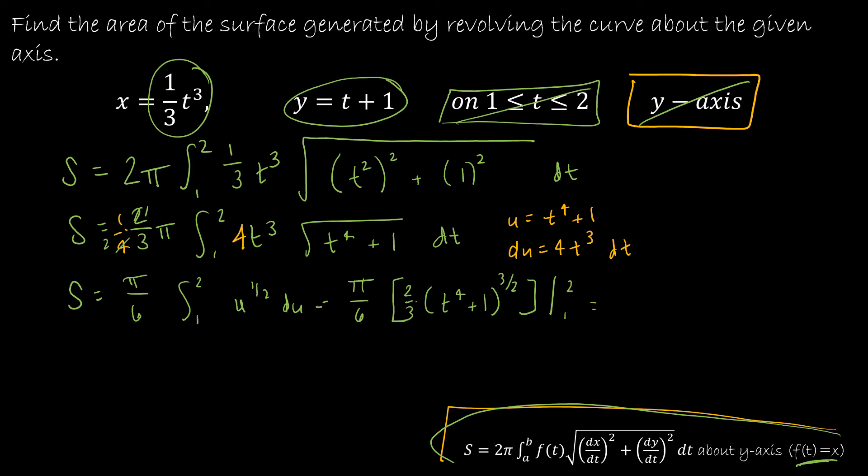So doing just a little bit more simplification, I'm going to reduce and reduce. And get π/9. And then I have, plugging in 2, I get 17^(3/2) minus 2^(3/2).